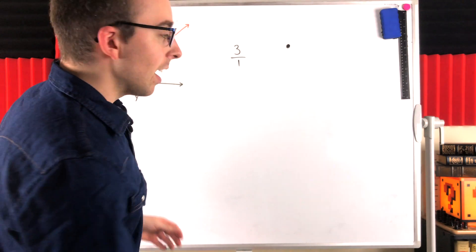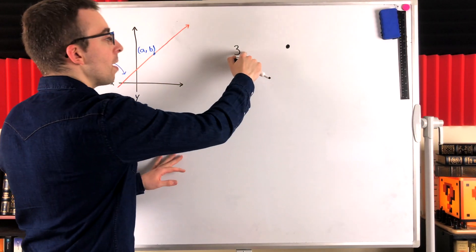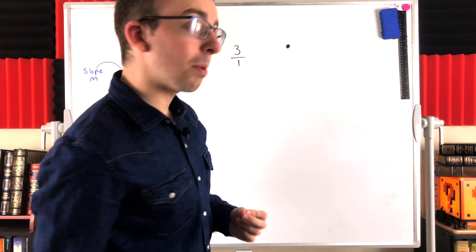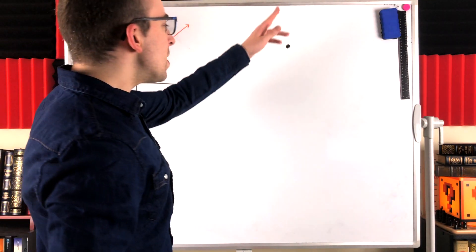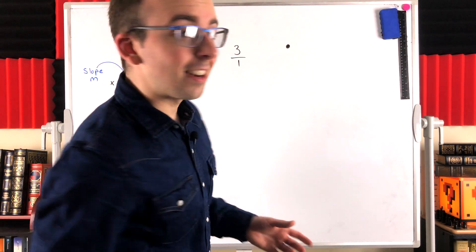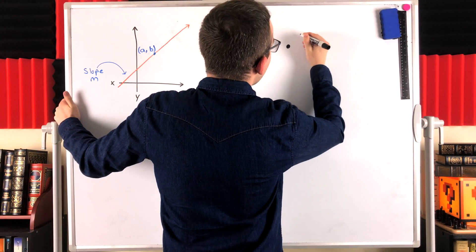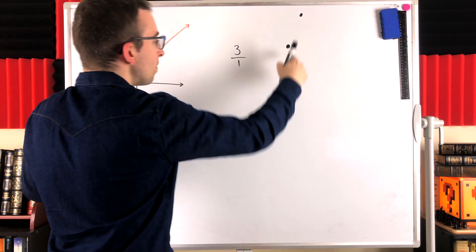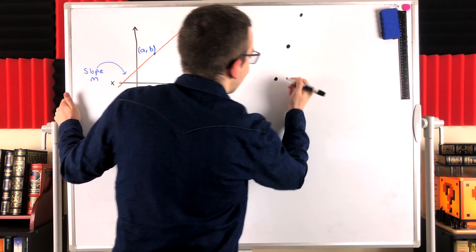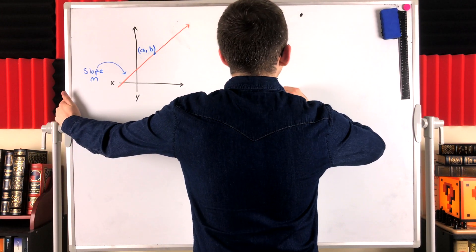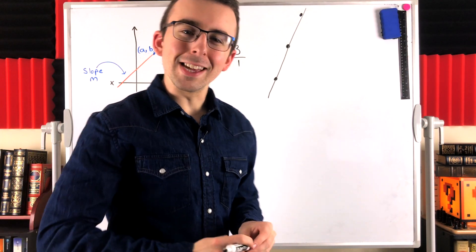This tells us if we go forward one unit, that's the run, then we must go up vertical change, the rise. We must go up three units in order to stay on the line. So, using this point and the slope, we could plot as many points on the line as we please, and then draw the line. For example, we could go forward one and then up three units. That would be a point on the line, or we could go backwards. We could go left one and then down three units. That's another point on the line. We could do that as many times as we please and then draw our line.